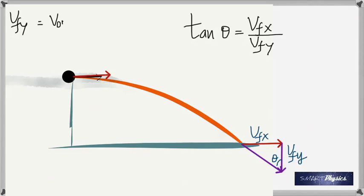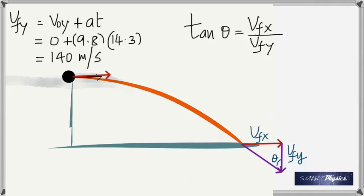To find VFy, we use the equation V0y plus at. Initial vertical velocity is zero, so it's 9.8 times 14.3, which gives 140 meters per second. Remember that VFx was 200 meters per second. VFy is 140. Divided, you get 1.43. Take the arctangent of that, you get 55 degrees.